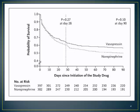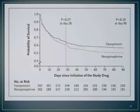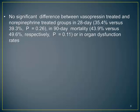The survival curve at 28 days and at 90 days showed no statistically significant difference in mortality between both arms. Mortality was 35% versus 39% at 28 days, and 43% versus 49% at 90 days — again, no statistically significant difference. There was also no difference in organ dysfunction rates between both groups.